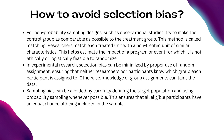In experimental research, selection bias can be minimized by proper use of random assignment, ensuring that neither researchers nor participants know which group each participant is assigned to. Otherwise, knowledge of group assignment can taint the data. Sampling bias can be avoided by carefully defining the target population and using probability sampling whenever possible, ensuring that all eligible participants have an equal chance of being included in the sample.